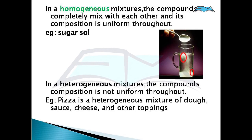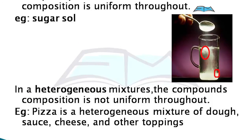In a heterogeneous mixture, the composition is not uniform throughout. For example, pizza — pizza is a heterogeneous mixture of dough, sauce, cheese, and other toppings. Someone may like more cheese, someone less cheese, someone more sauce, someone less sauce. So the composition is not uniform. Therefore it is a heterogeneous mixture.